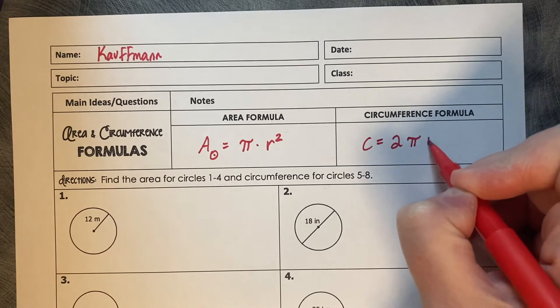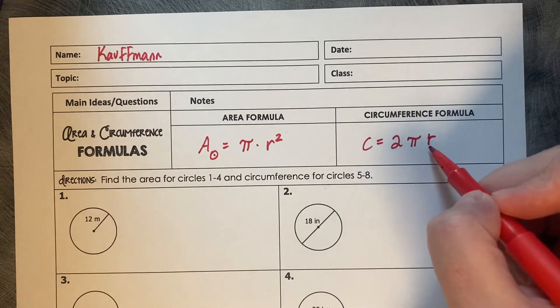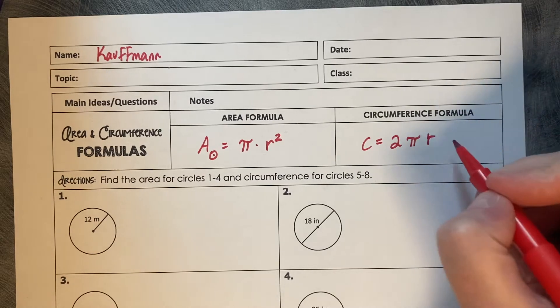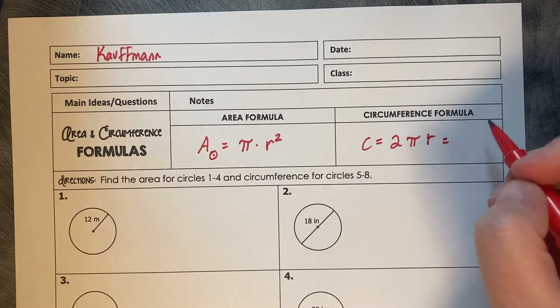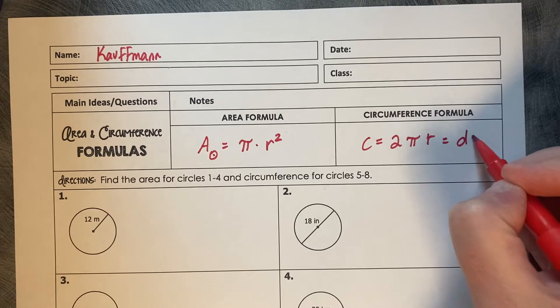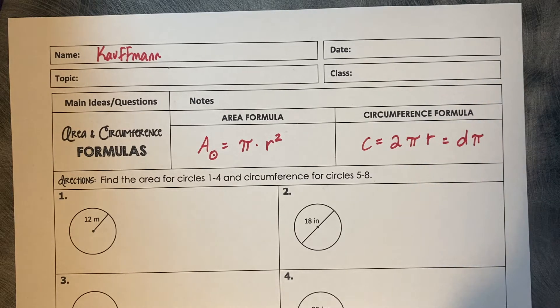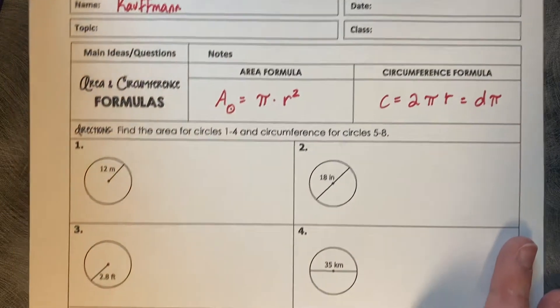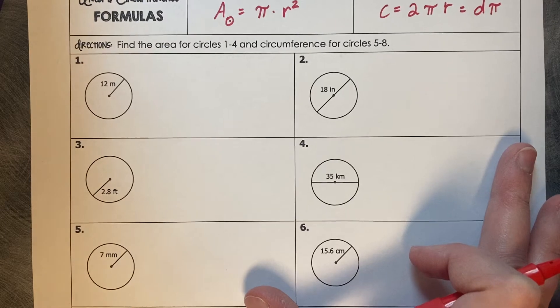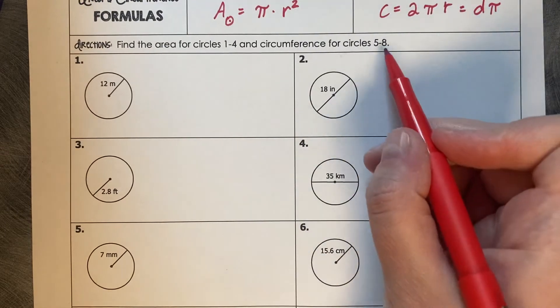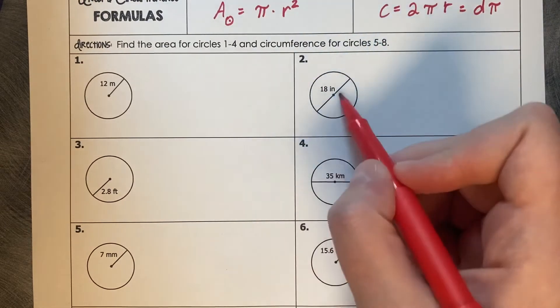The circumference formula is 2 times pi times the radius. Most of the time we're going to join the 2 and the r together and leave the pi alone, so it ends up being 2 times a radius which is the same thing as a diameter. So you can do diameter times pi as well and get the same answer. Let's try some examples: find the area for the circles 1 through 4 and the circumference for circles 5 through 8.